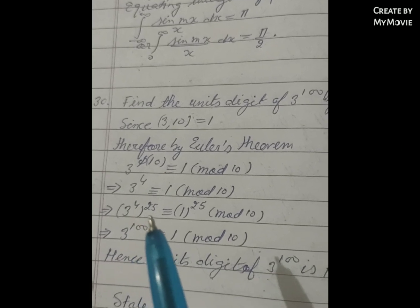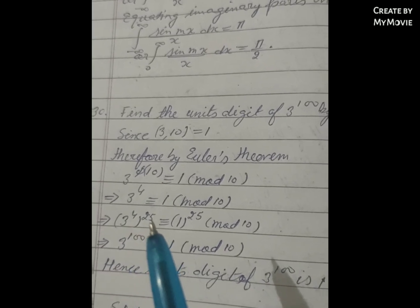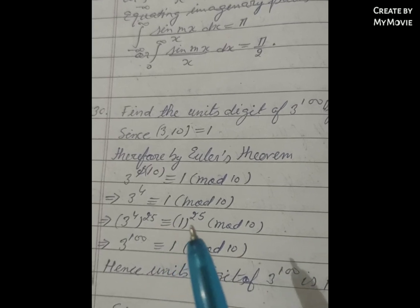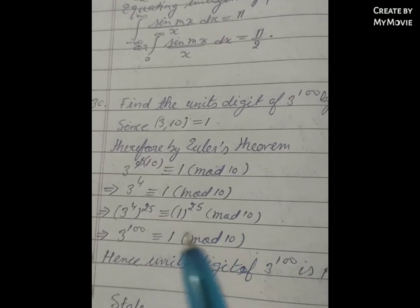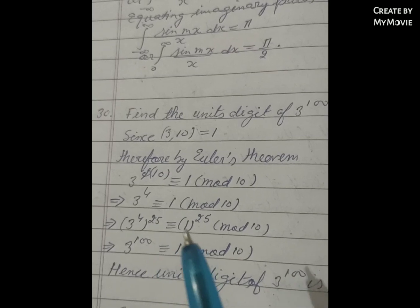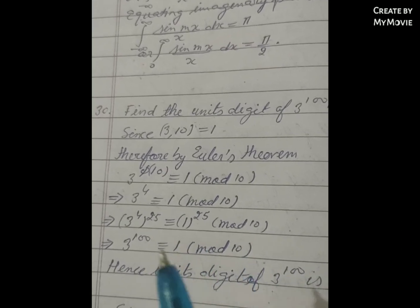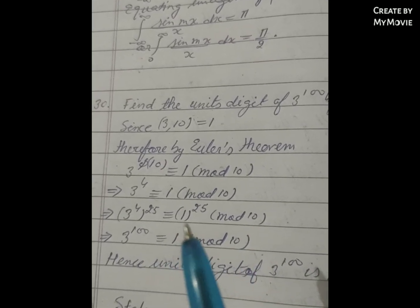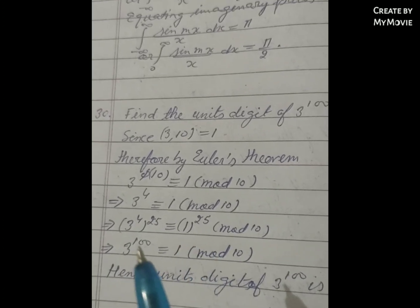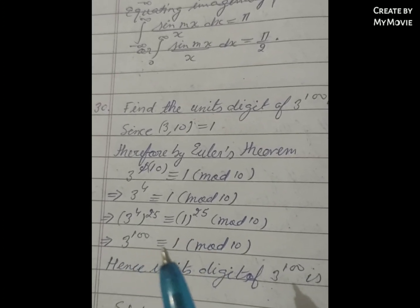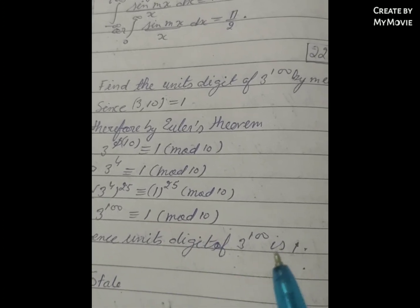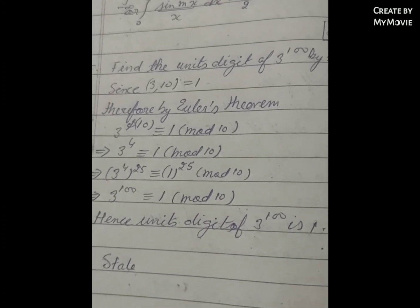Therefore, 3 raised to power 4 times 25 is congruent to 1 raised to power 25 modulo 10. Since 81 divided by 10 gives remainder 1, we get 3 raised to power 100 is congruent to 1 modulo 10. Hence the unit digit of 3 raised to power 100 is 1.